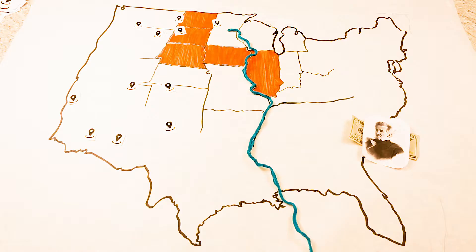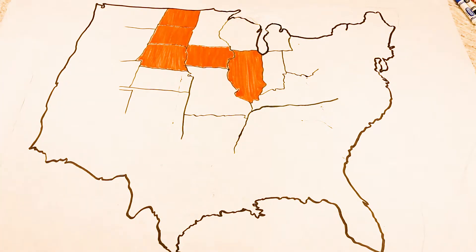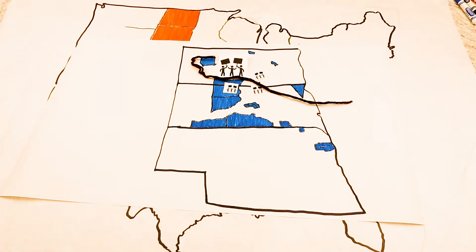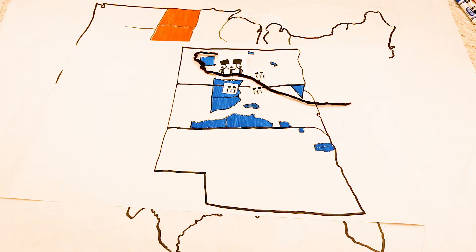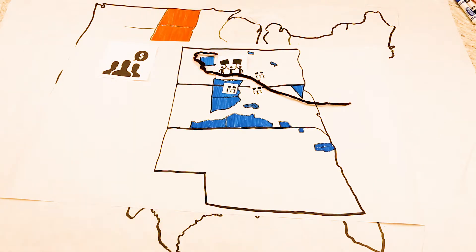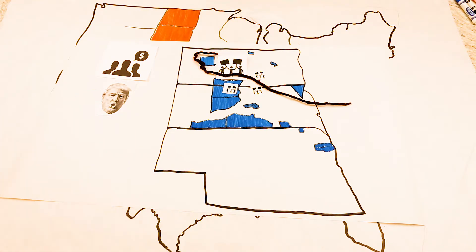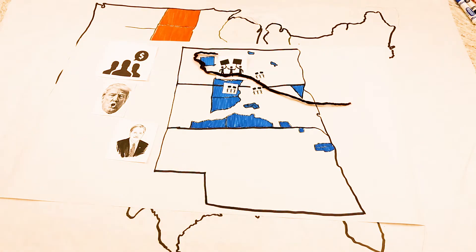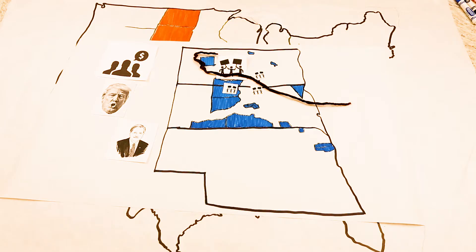Now that we know who the No DAPL protesters are and a small percentage of history, we will examine how DAPL came to be. The pipeline is being constructed by Dakota Access LLC, a subsidiary of Energy Transfer Partners LP. Energy Transfer Partners has had support from President Donald Trump, Senator John Hoeven, Representative Kevin Kramer, and many more.